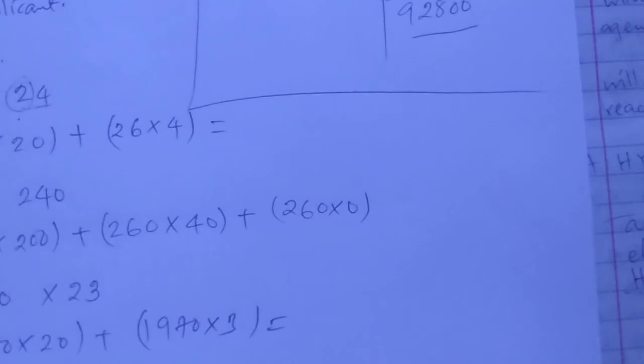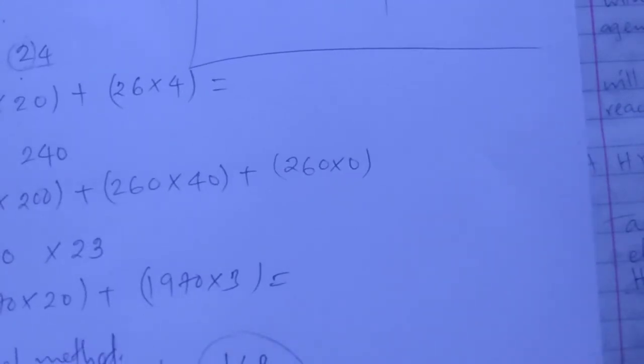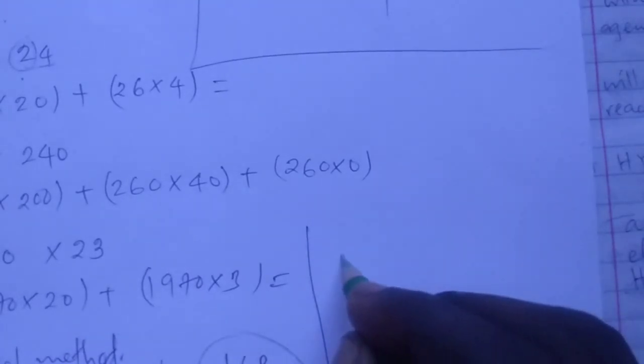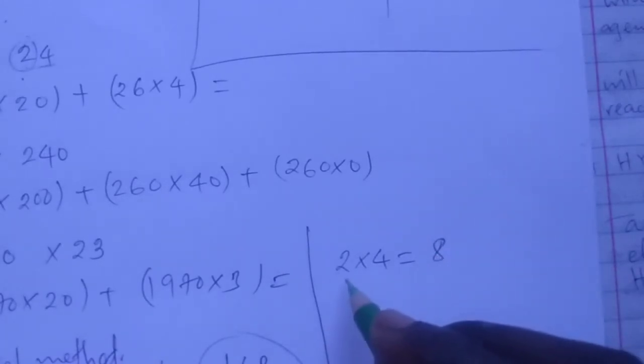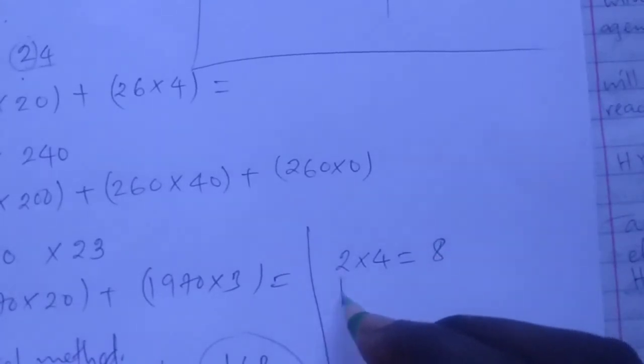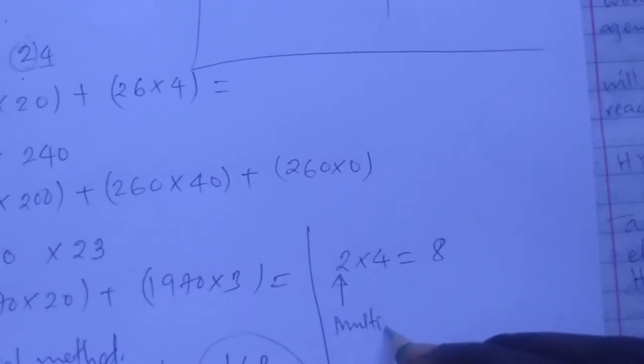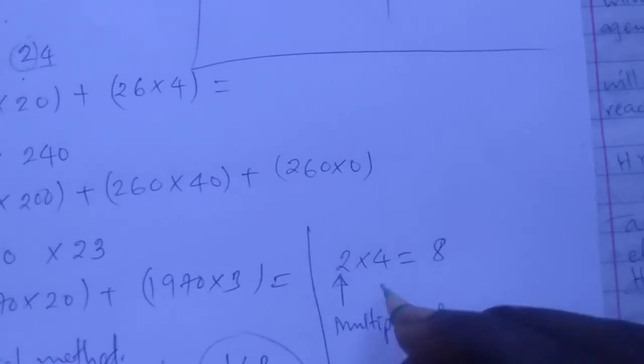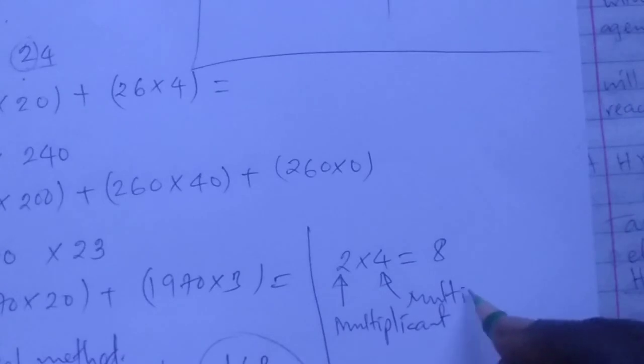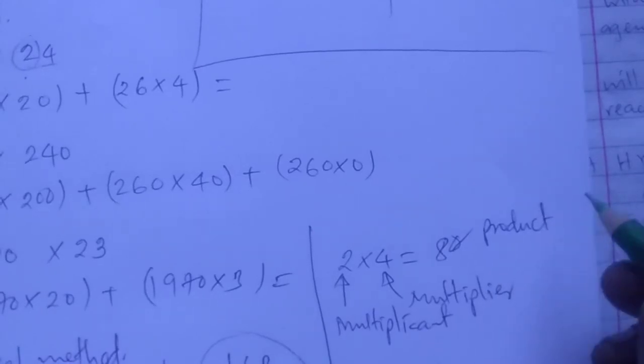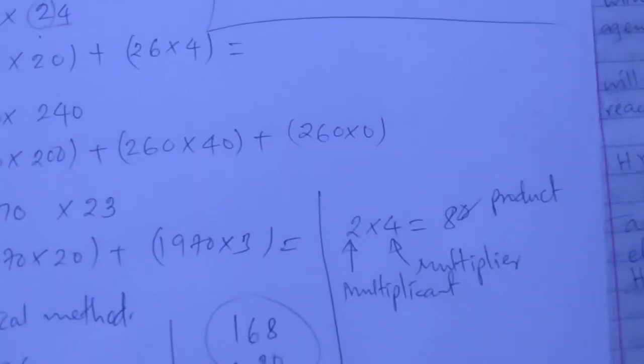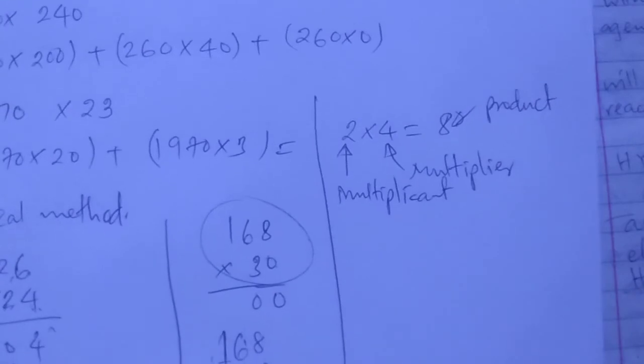In multiplication, we have the multiplicant, the multiplier, and the product. For 2 times 4 equals 8, the first number is the multiplicant, the second number is the multiplier (the one you multiply by), and this is the product. We have the multiplicant, the multiplier that we multiply with the multiplicant, then we get the product.